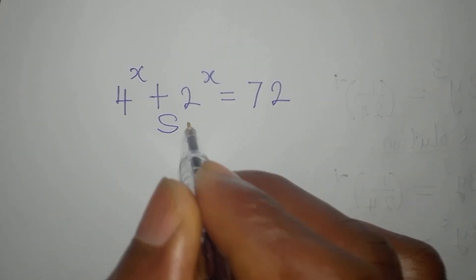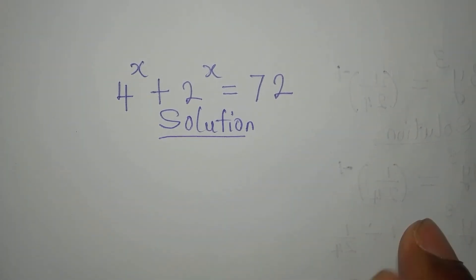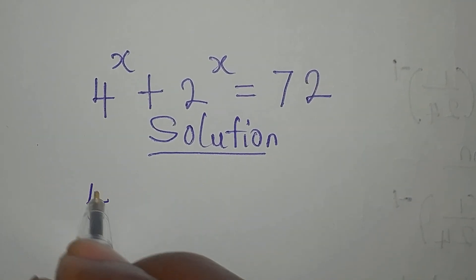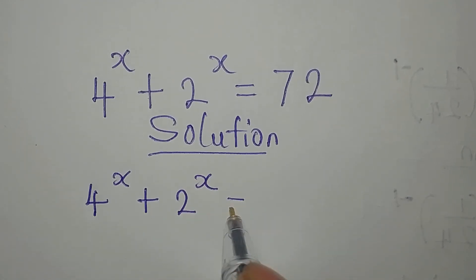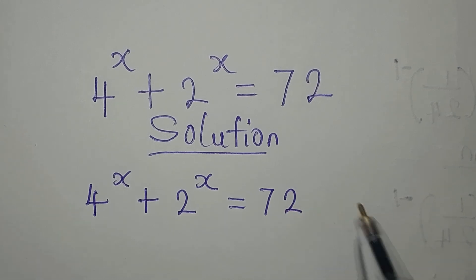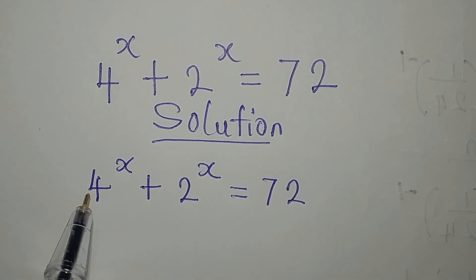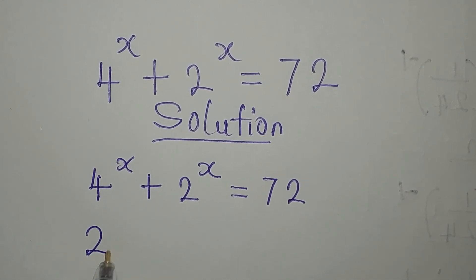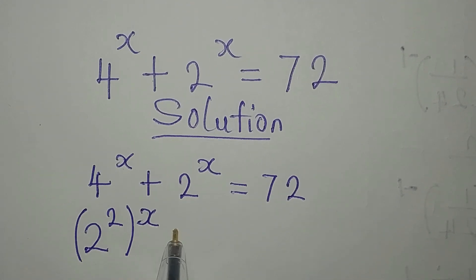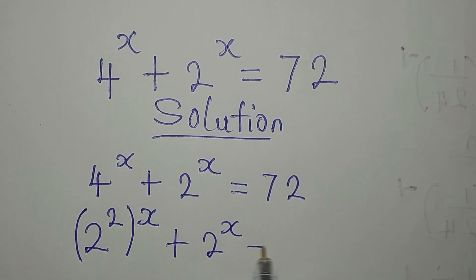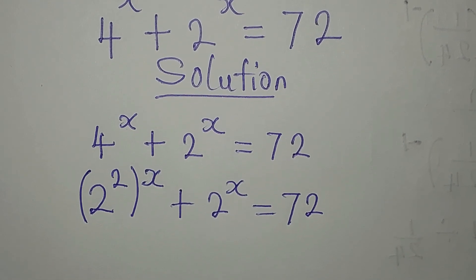Let's provide the solution to this problem. We have 4 to the power of x plus 2 to the power of x equals 72. To continue, we are going to break this 4 into 2, so that we have 2 to the power of 2, then this power of x will come here, giving us 2 to the power of 2x plus 2 to the power of x equals 72.